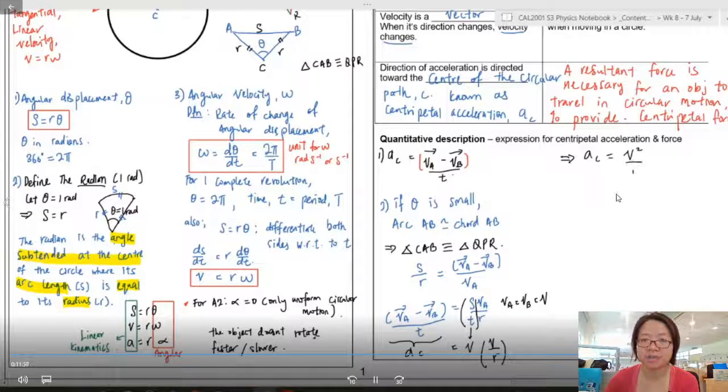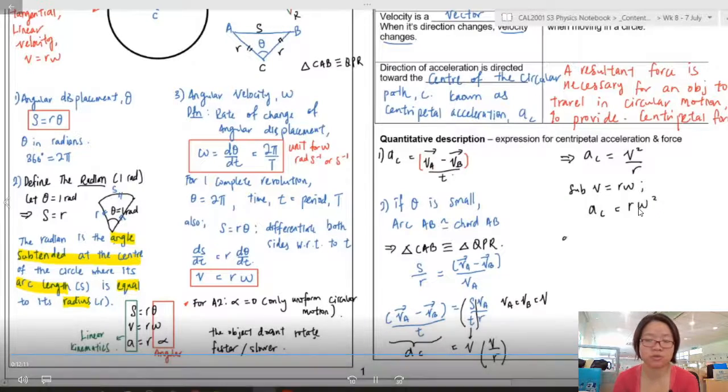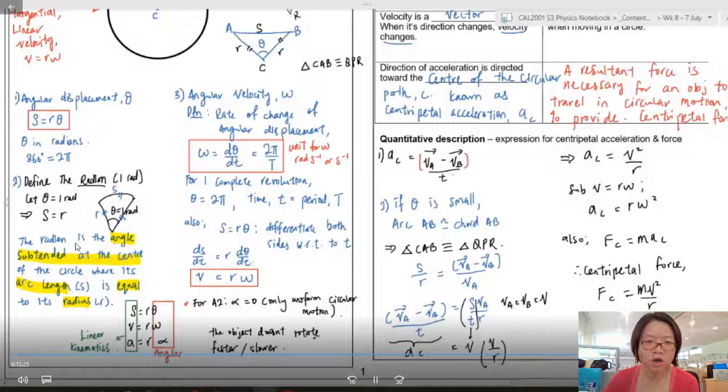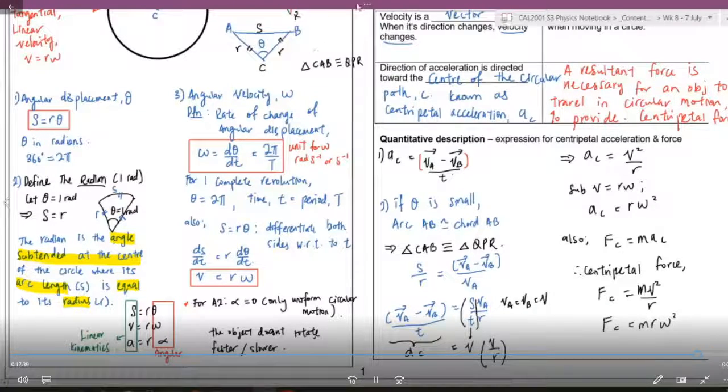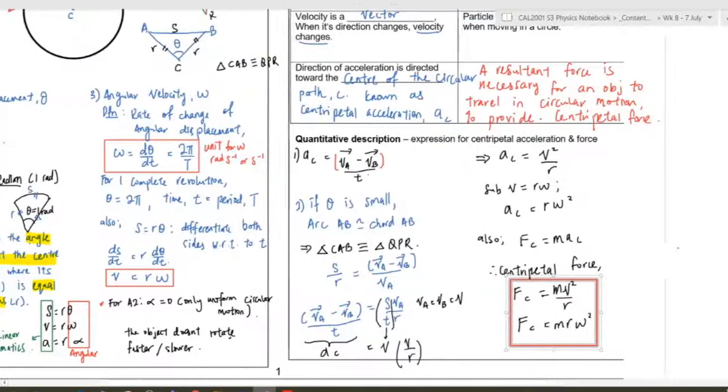So I put all this together, I get centripetal force, sorry, centripetal acceleration is V square over R. So we're going to substitute V is equal to R omega inside, and we will arrive at R omega square. Okay, also, because FC is equal to MAC, so centripetal force represented by FC will be equal to MV square over R. Or sometimes we can use MR omega square. So both equations are important. Okay, you use the equation depending on the question.